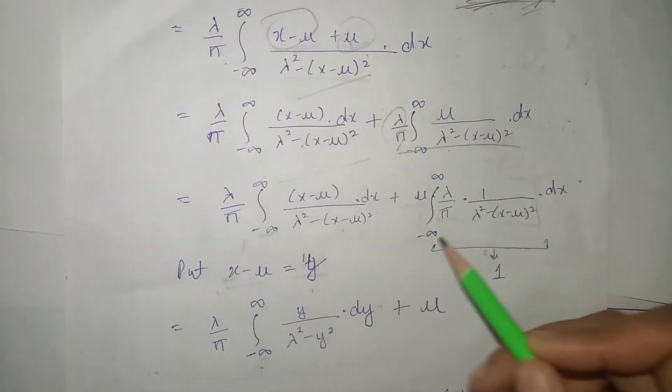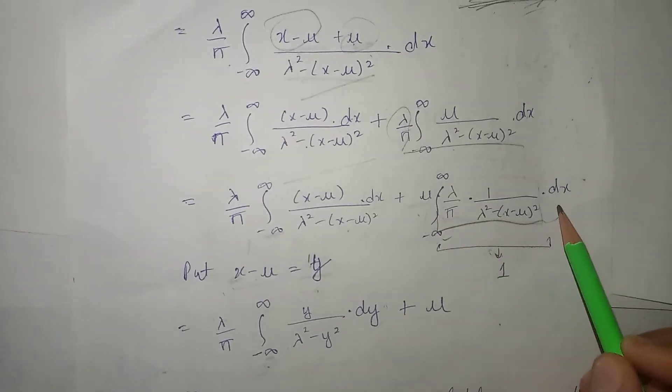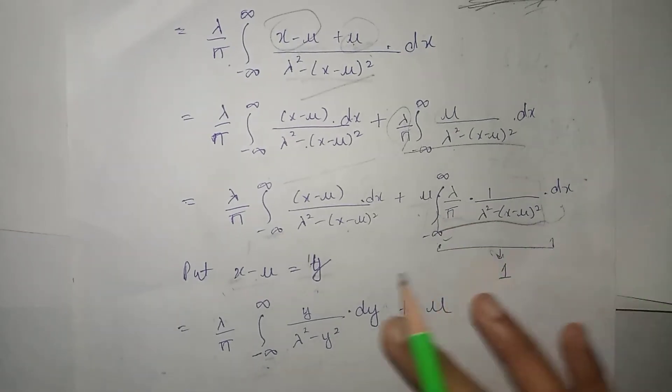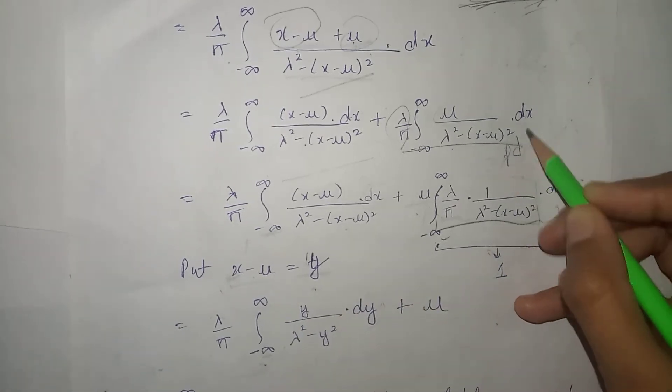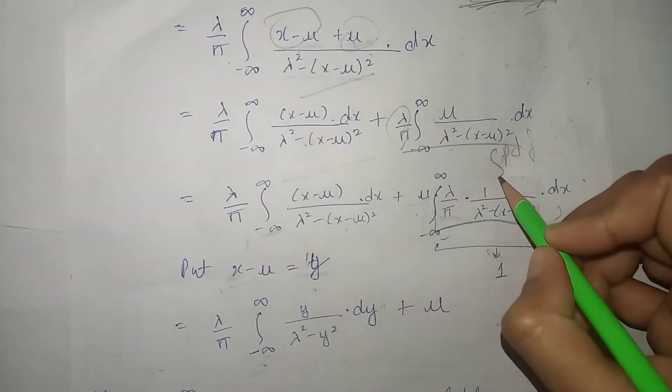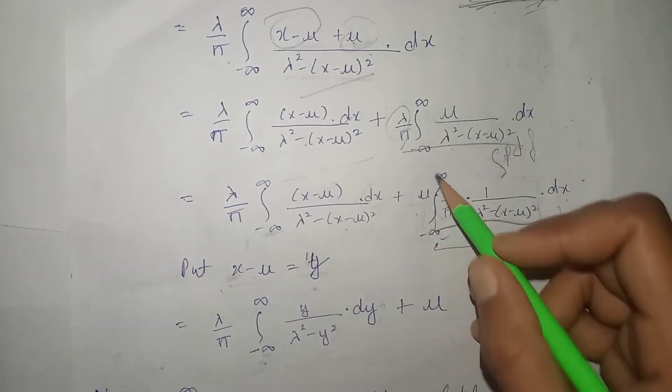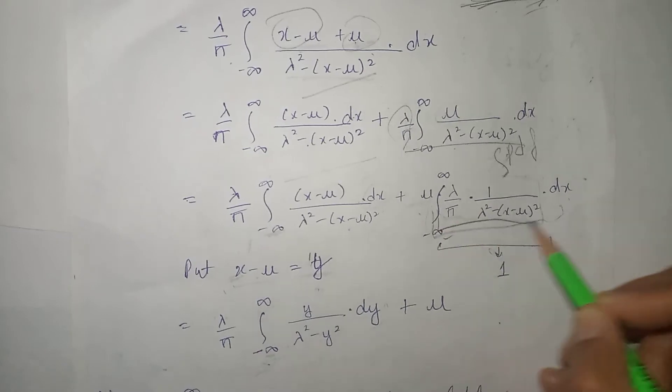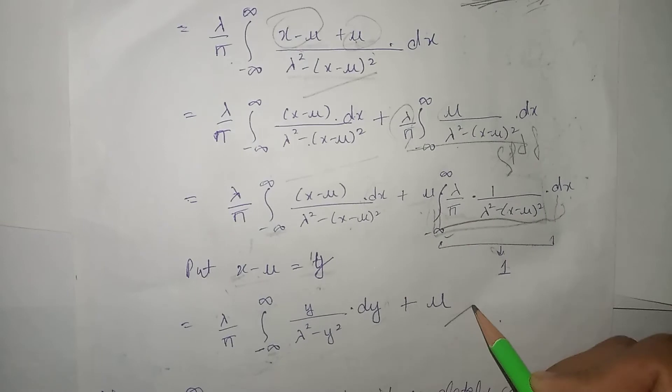Next, agar hum is term ko andar le jaaye aur isko bahar nikal de, toh hum dekhenge ki yeh toh humara pdf of Cauchy distribution ki hai, and humne malum hai. That is continuous distributions mein, agar hum pdf ki integration kar de over the all range of the variable jo use ho raha hai, that is x ki all range par, toh us ka answer hamare paas one ke equal hota hai, that is is puri term ka answer hamare paas one ke equal aagaya, one multiply by mu is equals to mu.